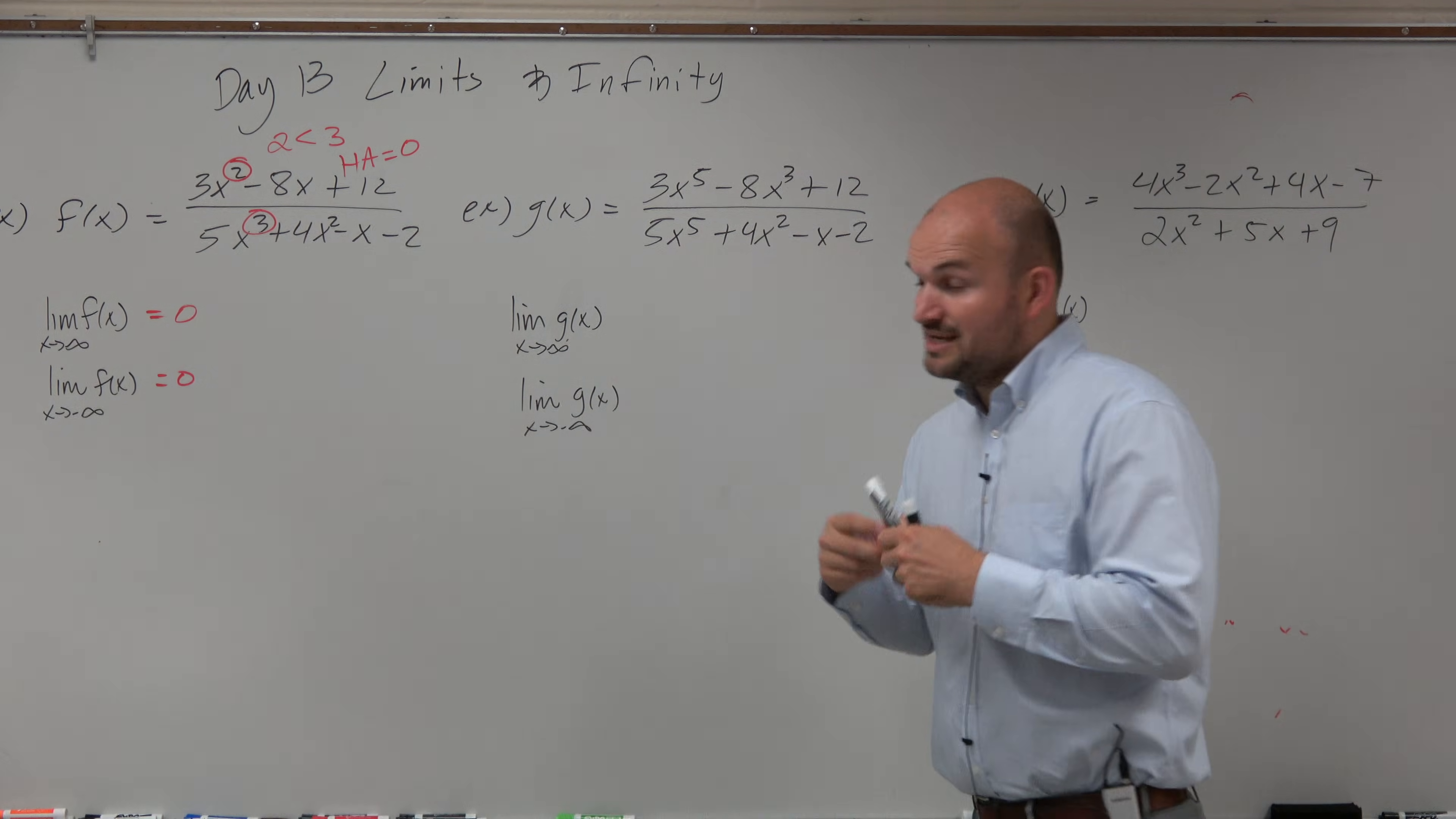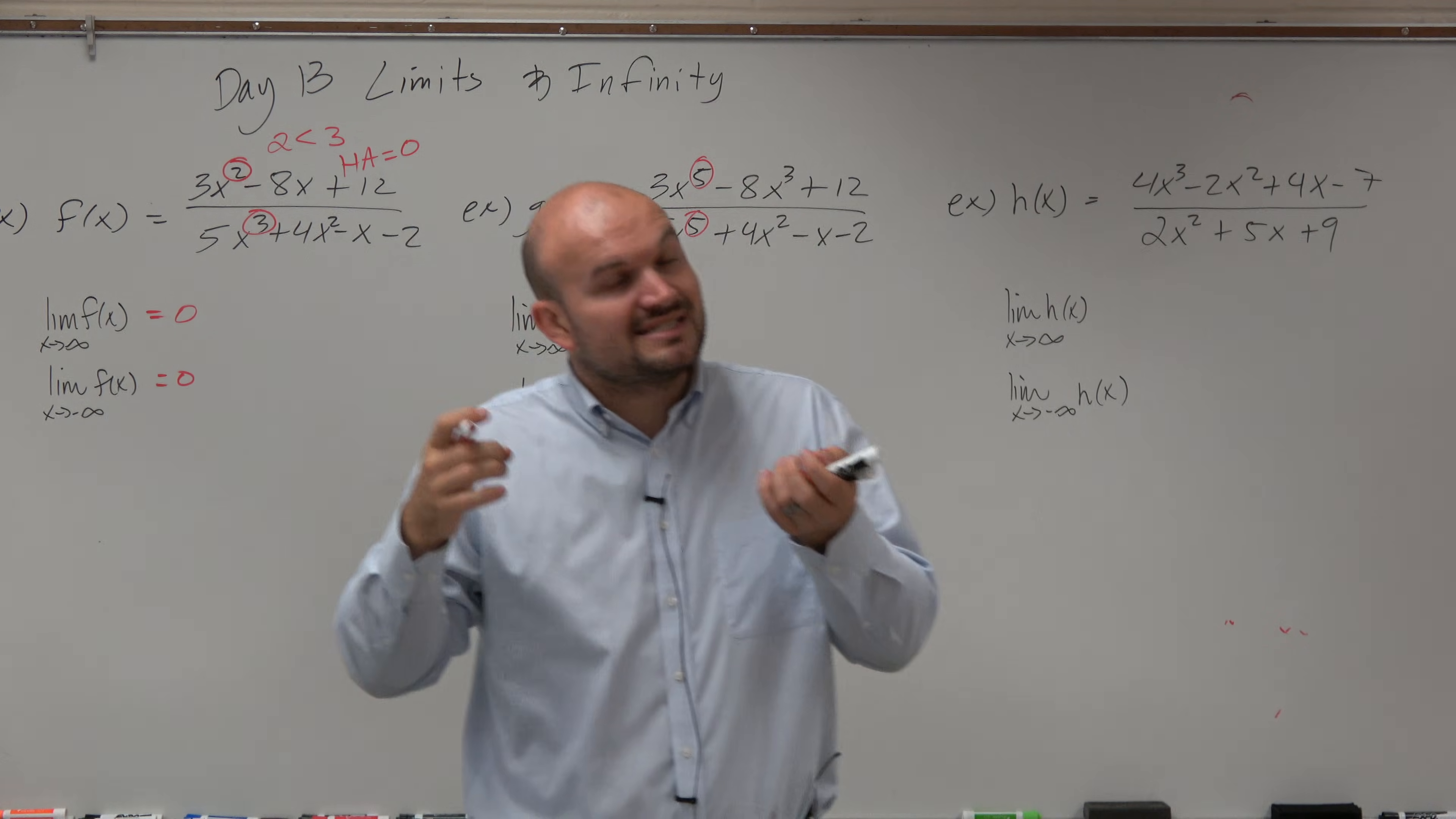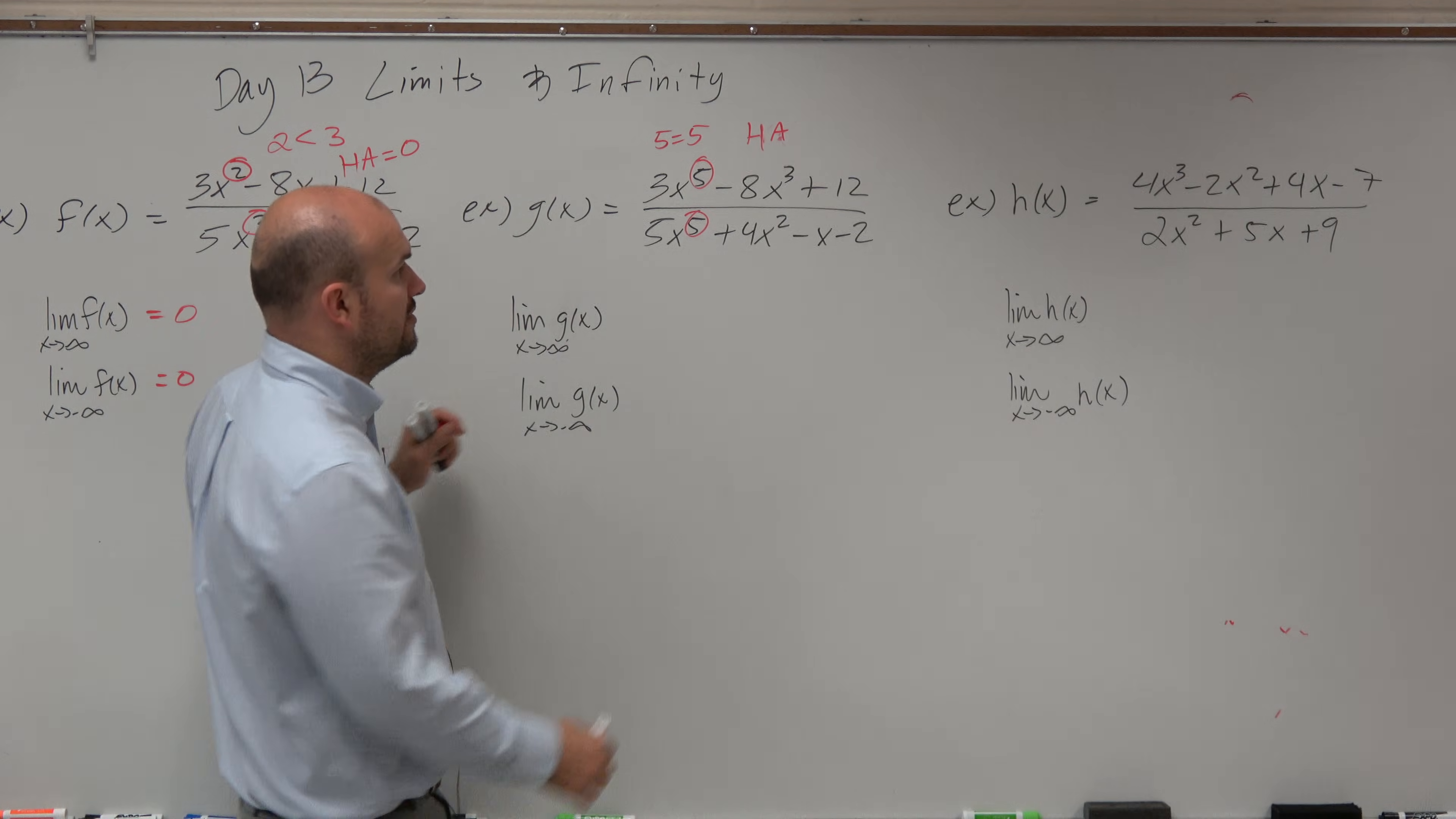So, the next one is, again, we're identifying the degrees of them. 5 and 5. Since the degrees are exactly the same in the numerator and the denominator, we know that the horizontal asymptote is equal to the ratio of my coefficients.